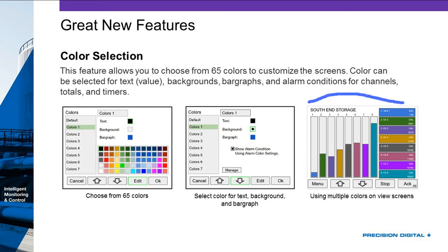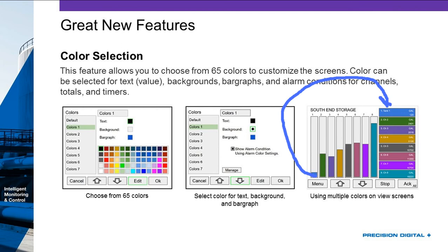Looking at this screen, you'll see the different kinds of things we can color. You've got the background itself — for example, this top one is in blue. We've set the text to white because it goes better with the blue rather than black on such a dark color. And we color-coded the bar graph to be the same color as the background, making it very easy to connect those two visually.